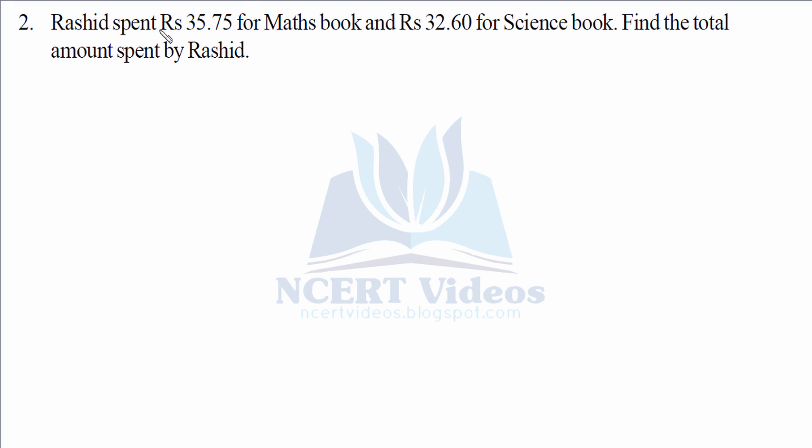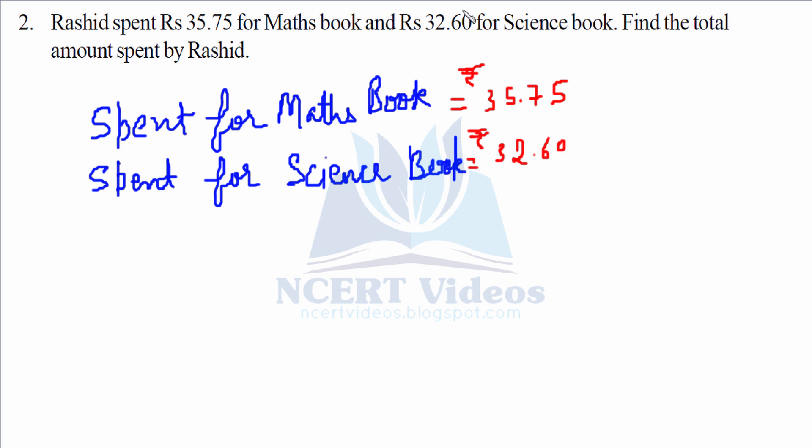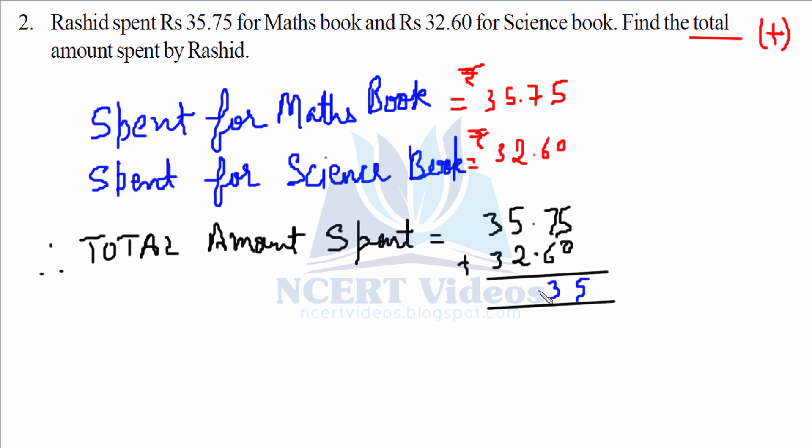Rashid spent rupees 35.75 for maths book and rupees 32.60 for science book. Find the total amount spent by Rashid. Let's write the statement: spent for maths is 35.75, for science 32.60. Total means addition, so we'll add. Therefore 5, 13, 8, 6. He spent total 68.35 rupees.